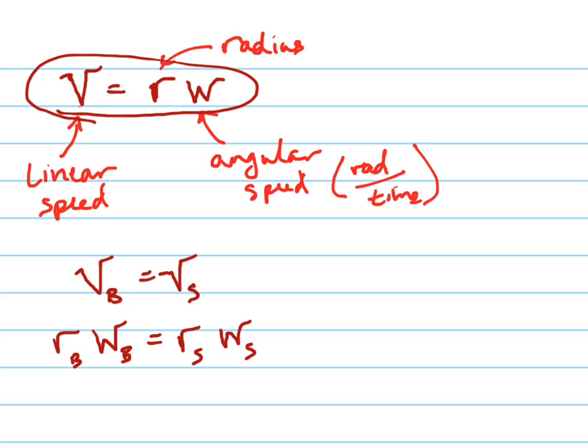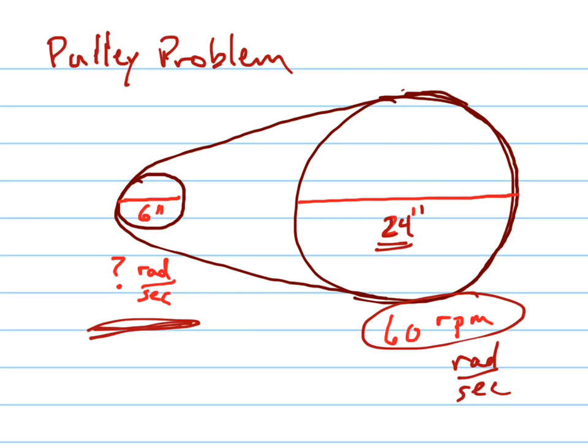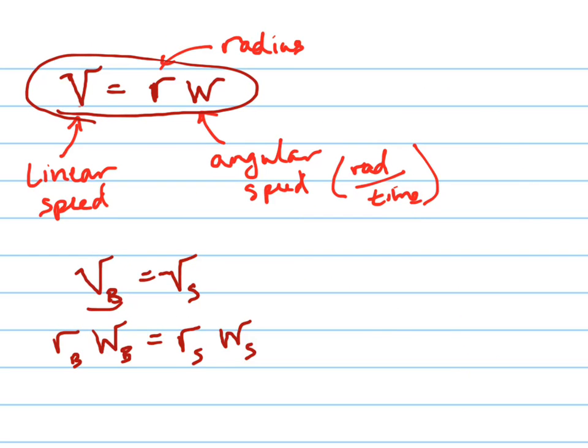And the way we're going to find out how the angular speeds are related to each other of the big wheel and the small wheel in my pulley is we're going to recognize that the linear speed of the actual rope itself, or the belt I should say, the linear speed of the big pulley and the linear speed of the smaller pulley have to be equal to each other.